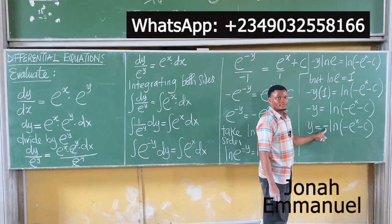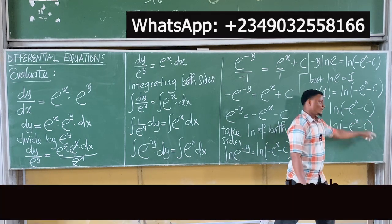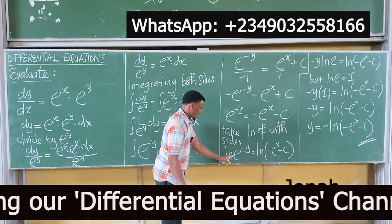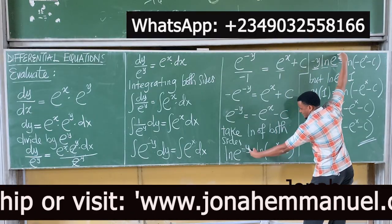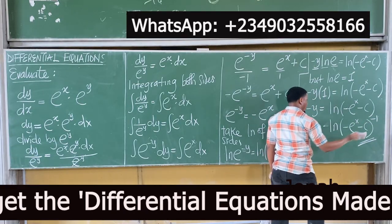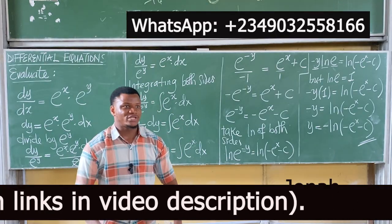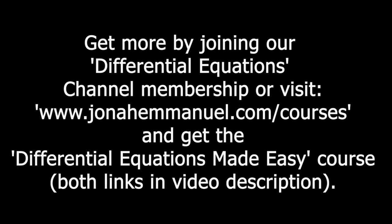Can we simplify further? The minus sign is the same as -1, which can come inside as a power. But at this stage we've solved the problem. Please go ahead and learn how to simplify to the most reduced form. For more, join our Differential Equations channel membership or visit www.joneemanuel.com/courses for the Differential Equations Made Easy course. Both links are in the video description.